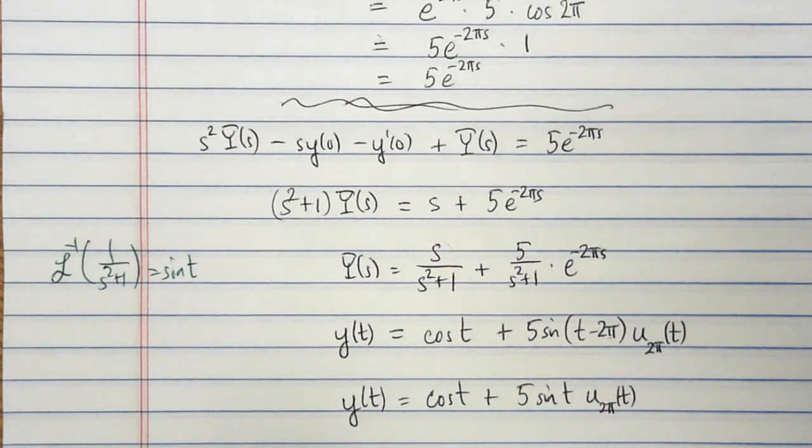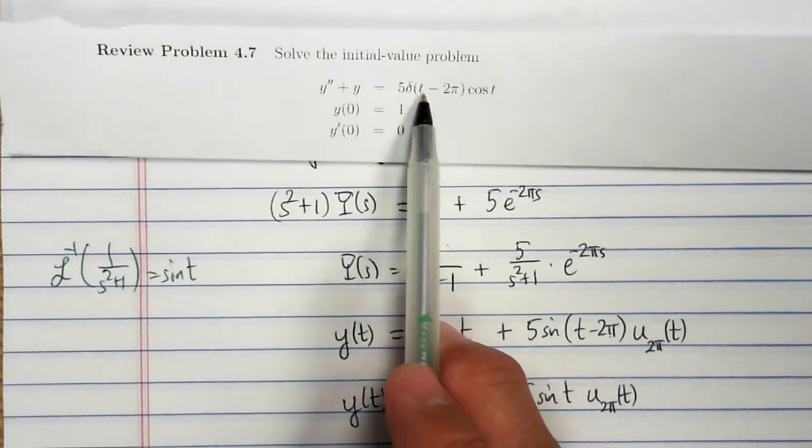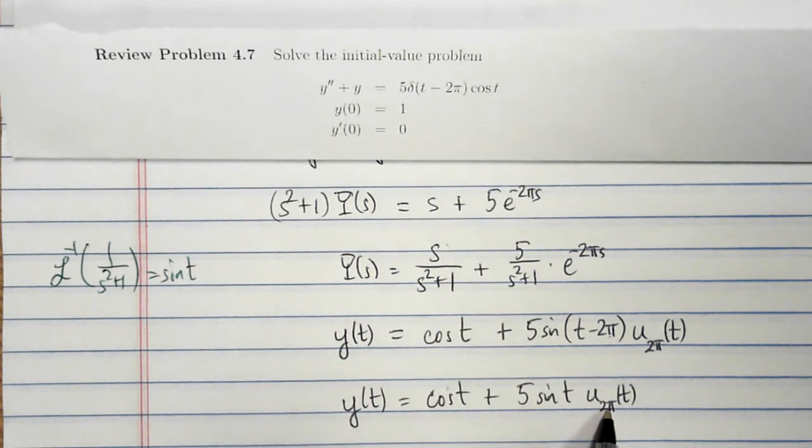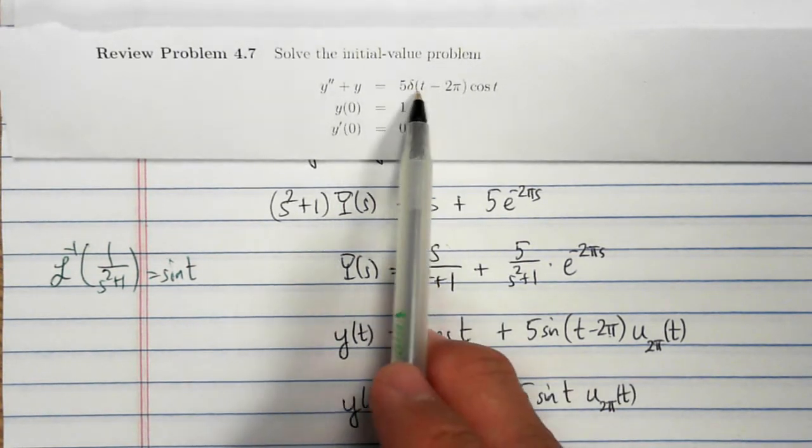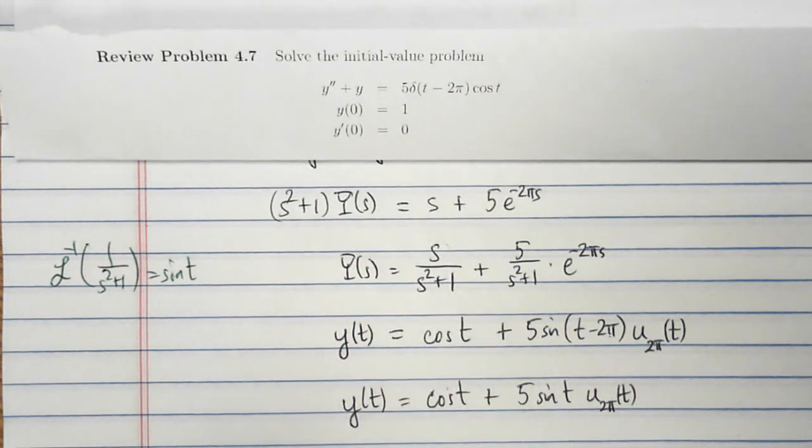And that is the answer to this problem. So this part accounts for the behavior of the motion of y before the impulse function occurs. And then after time 2 pi, we get a spike, and so I get an extra behavior because of the spike at time 2 pi.